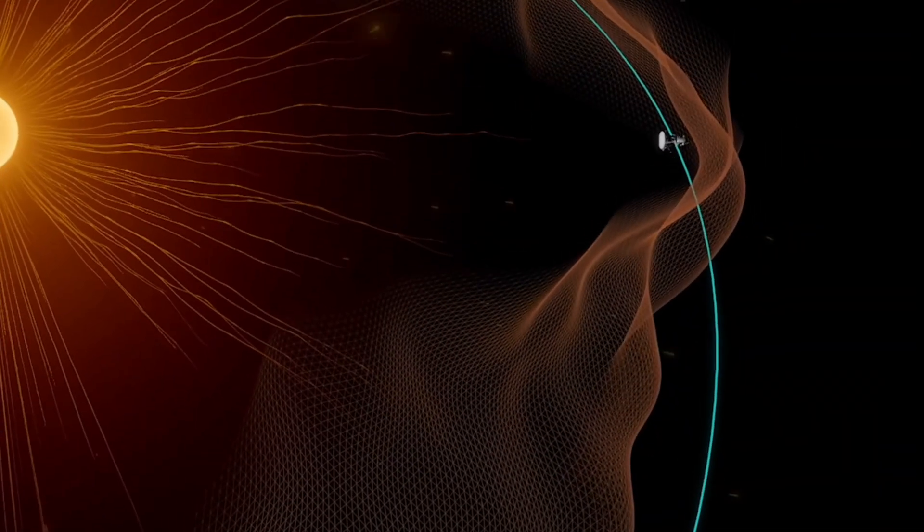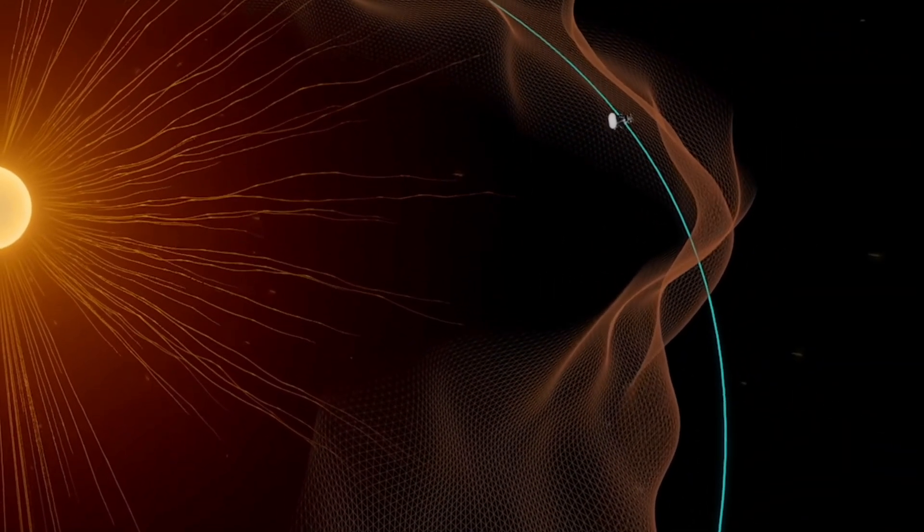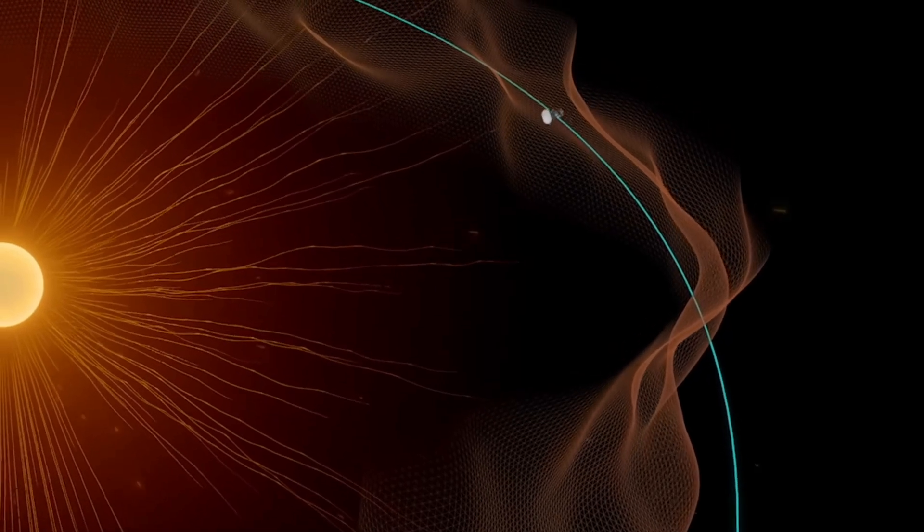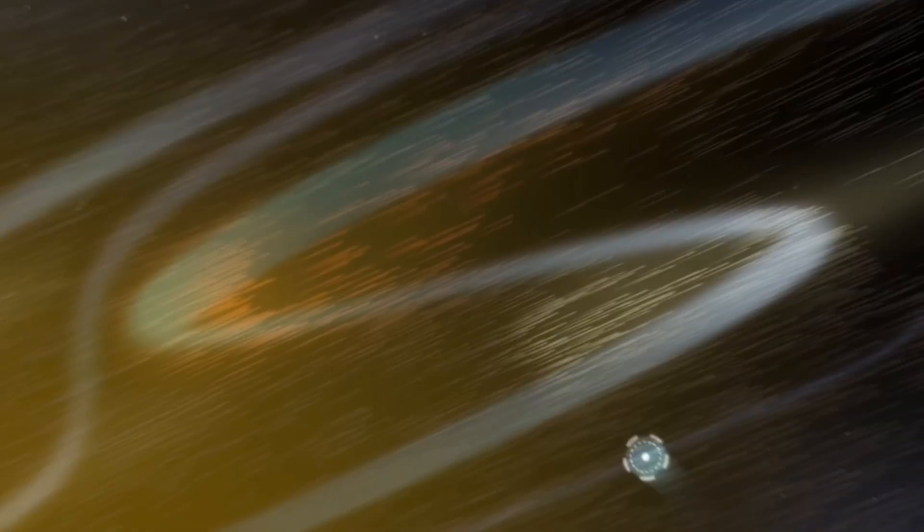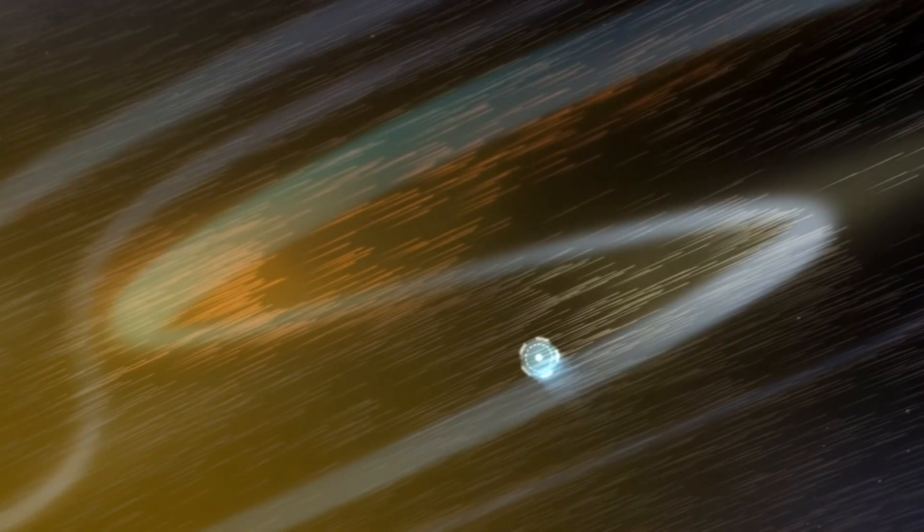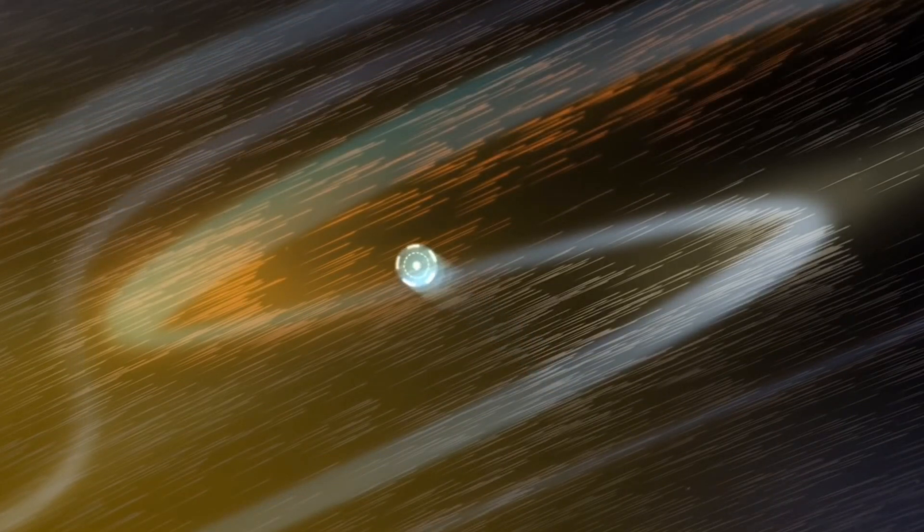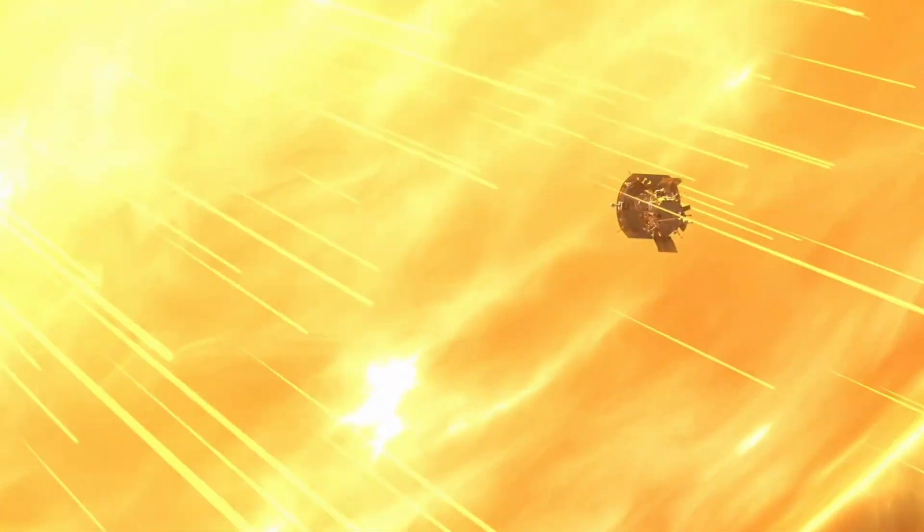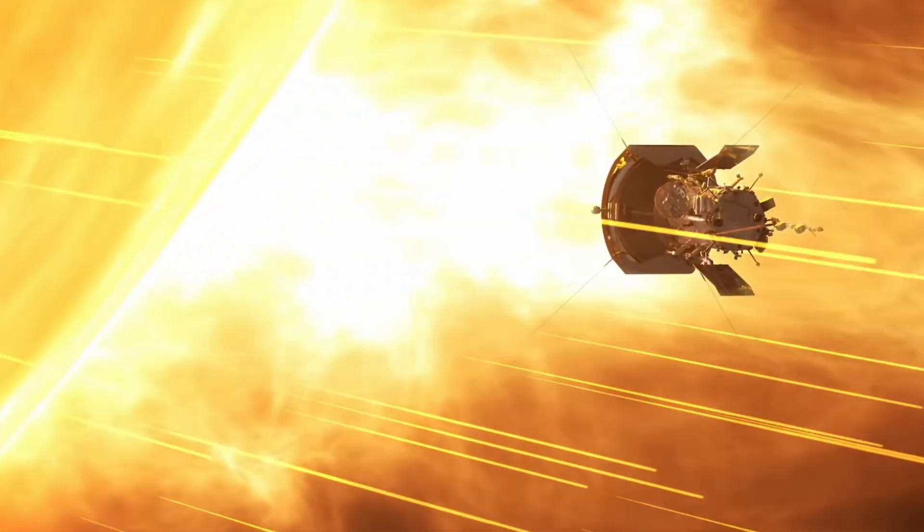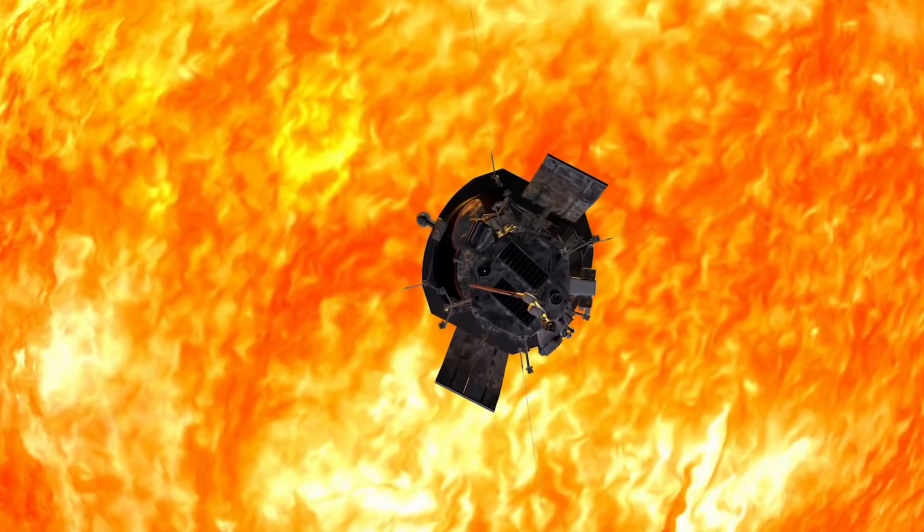The Parker Solar Probe crossed the Alphavent critical surface, which is between the end of the solar winds and the beginning of the sun's atmosphere. A major portion of this mission was for the solar probe to cross the Alphavent point to be able to fly into the solar atmosphere. According to the solar probe's data, the spacecraft entered the corona atmosphere around three times on April 28th.